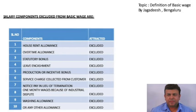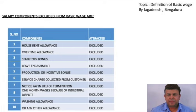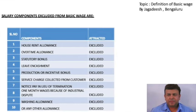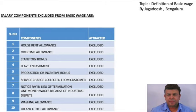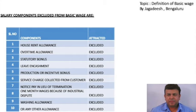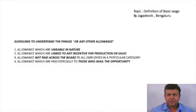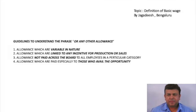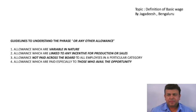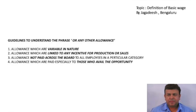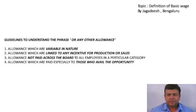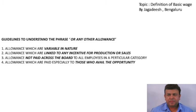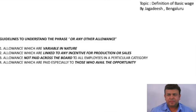To overcome this confusion, the Supreme Court has laid down four principles to decide whether a particular allowance can be considered under the exclusion list. The first principle is: if any allowance is variable in nature, it is considered under the exclusion list. If a salary component is fixed, it is considered as basic wage. The second principle is: if any allowance is linked to an incentive, such as production incentive or sales incentive, it is considered under the exclusion list, as these are variable in nature and change month on month. The third principle is: if any allowance is not paid across the board to all employees in a particular category, it is considered under the exclusion list.